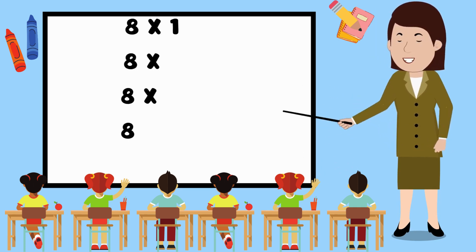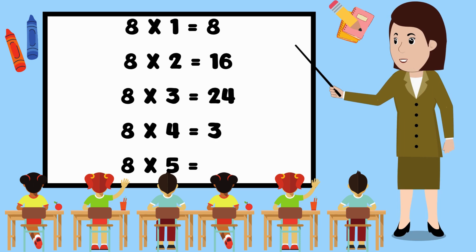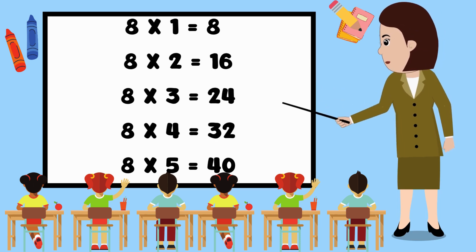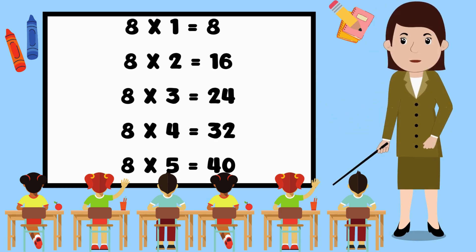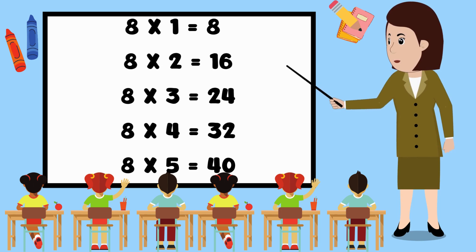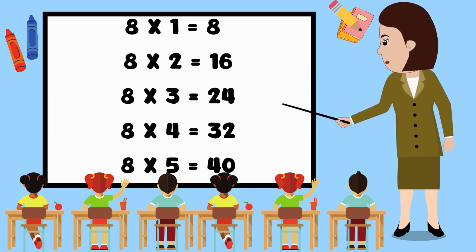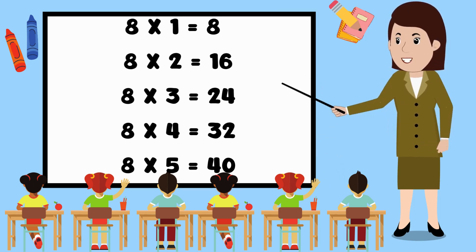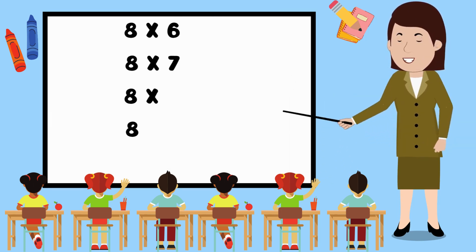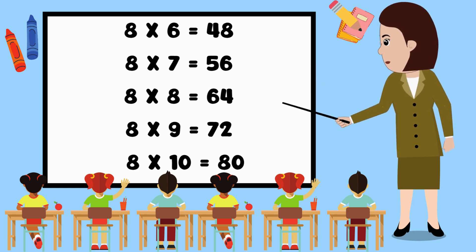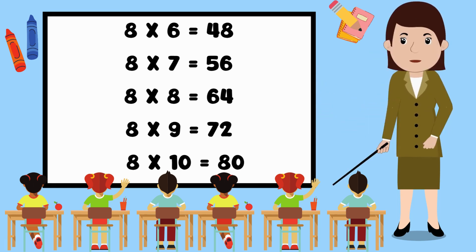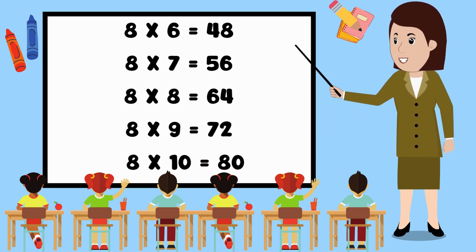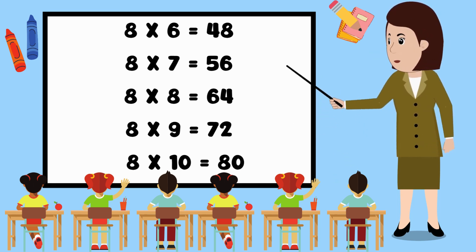Now, let us repeat once again. 8 1s are 8. 8 2s are 16. 8 3s are 24. 8 4s are 32. 8 5s are 40. 8 6s are 48. 8 7s are 56. 8 8s are 64. 8 9s are 72. 8 10s are 80.